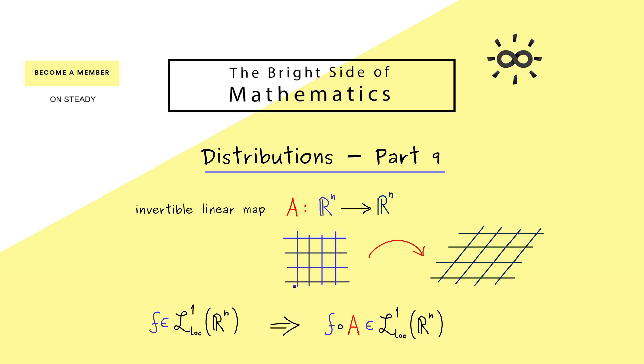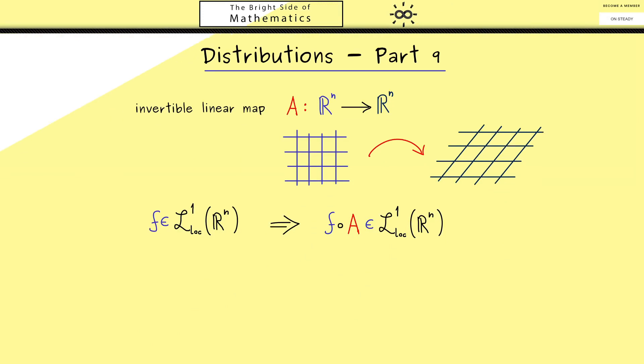Now of course the question for us is what is the connection between the two corresponding distributions. And you might already know this will be the blueprint for the general definition. In other words we need to define what happens to a distribution when we apply such a coordinate transformation.